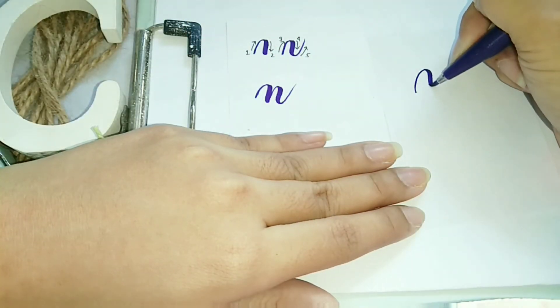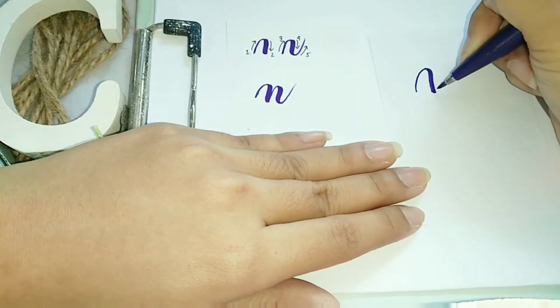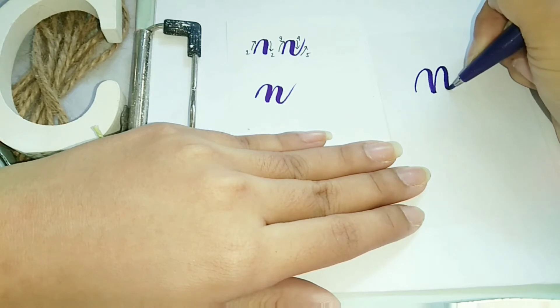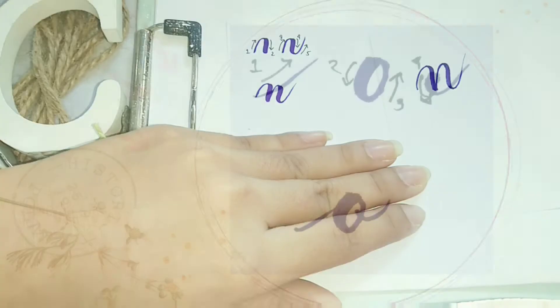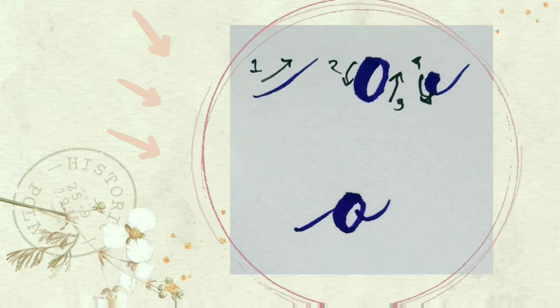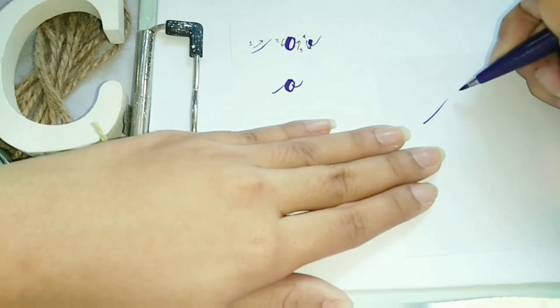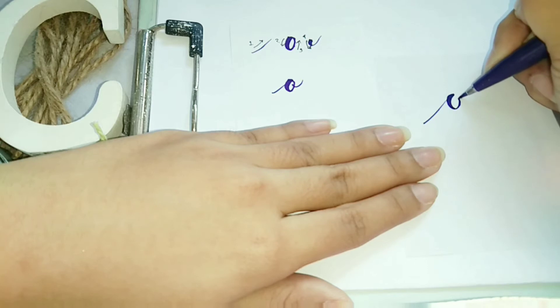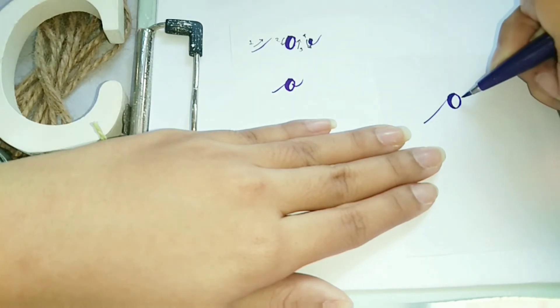So letter N, overturn stroke, tapos compound stroke. Sa O naman, overturn stroke, then Ovi, tapos parang maliit lang na comma. Ayan.